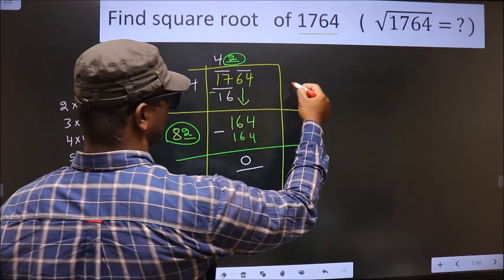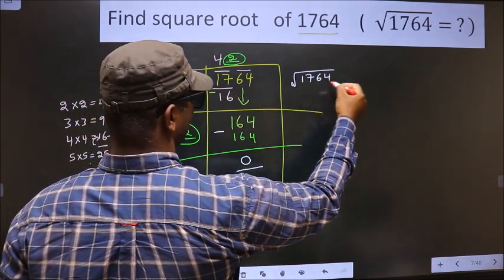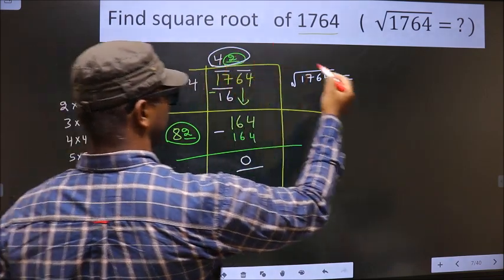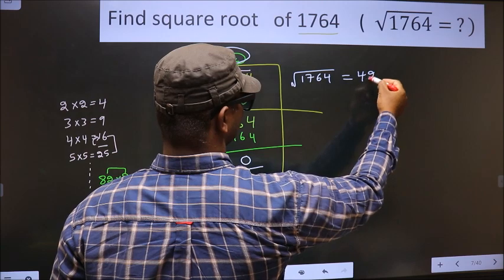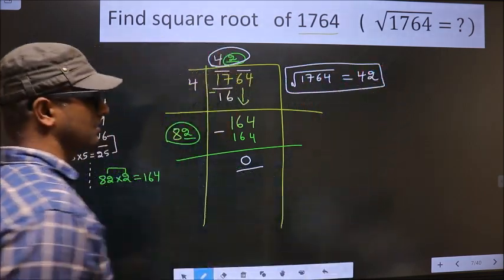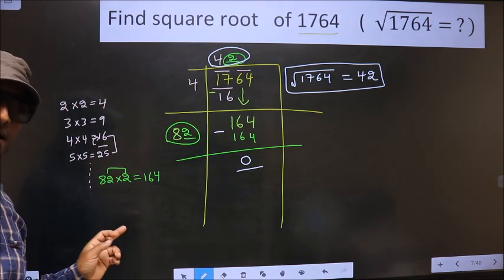And the square root of 1764 is this number. That is 42. This is our answer. Am I clear?